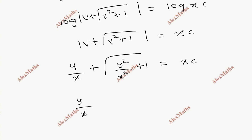Now again, y by x, take LCM x squared: y squared plus x squared under the root is equal to x times c.